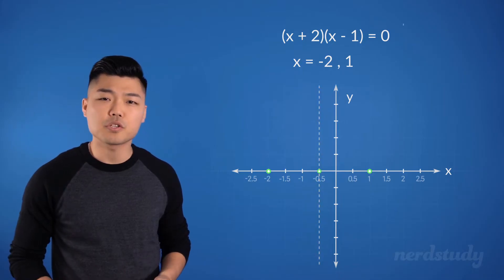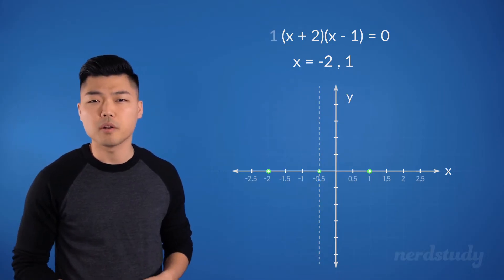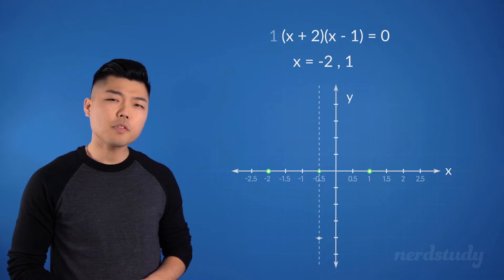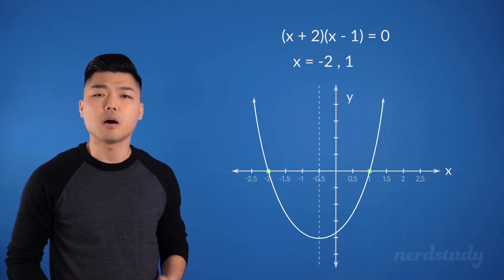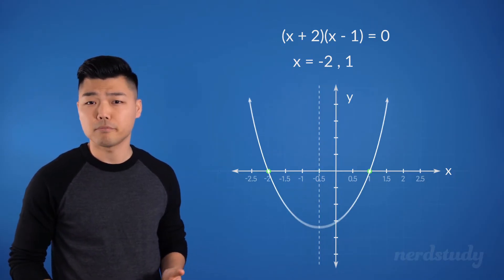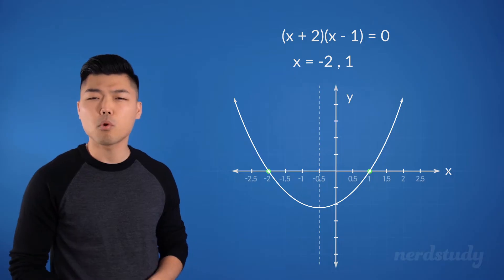And since this equation has an a value of 1, which is positive, we know that the parabola will be opening up. So, it could be like this, or more like this.